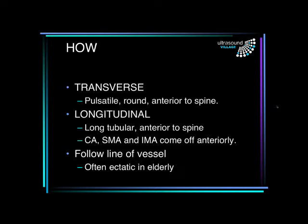In the transverse view, we're looking for a pulsatile, round structure that lies anterior to the spine. In the longitudinal view, we're looking for a long tubular structure that again is anterior to the spine, and we can identify the spine because of the scalloping shape of the vertebral bodies. If you get a good view, you may see the celiac axis and the superior and occasionally even the inferior mesenteric artery, although this is quite difficult and isn't absolutely necessary. As patients get older, the vessel often becomes ectatic and may not be in a nice straight line — it often bows off to the left.